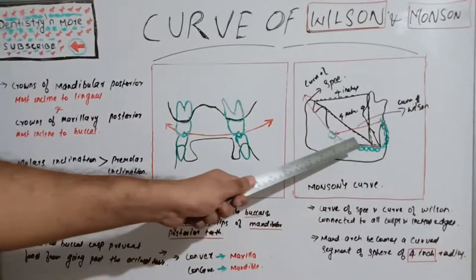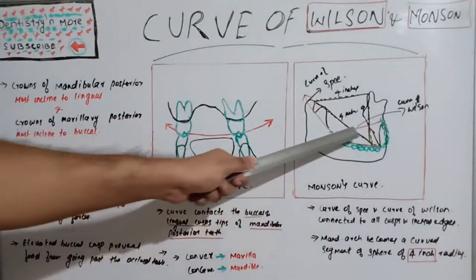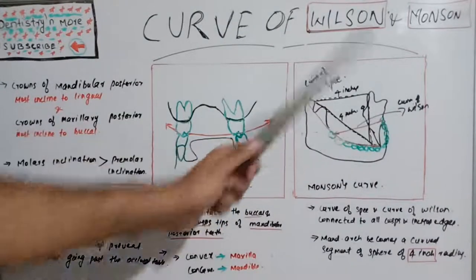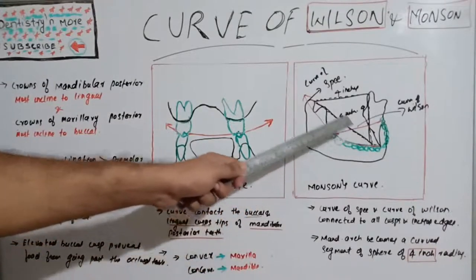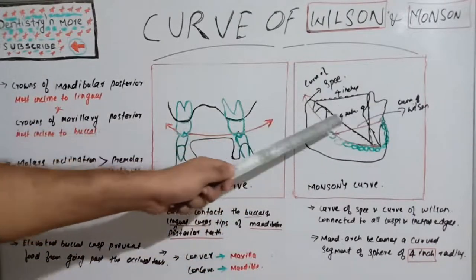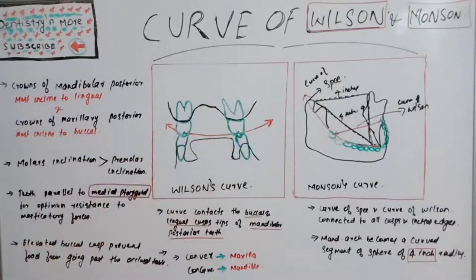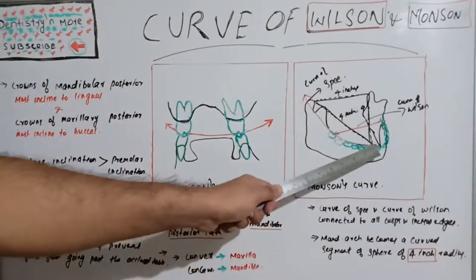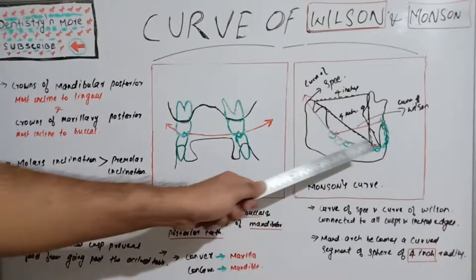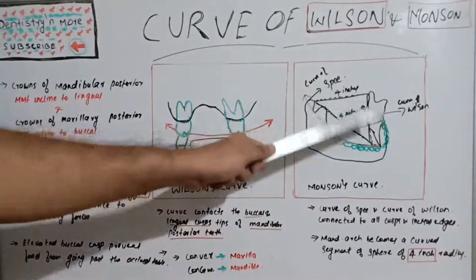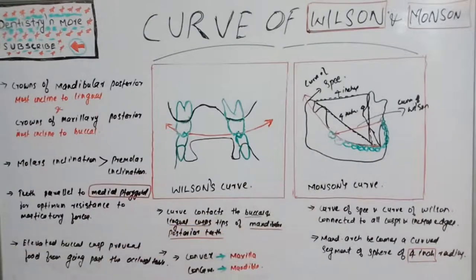This red line is curve of Spee and you can see this mediolateral curve which is the curve of Wilson. When we combine this, we get a 4-inch equilateral triangle which is connecting 4 inches from the condyles on either side and also to the central incisor mesial side. All sides are equal in dimension, that is 4 inches. That is known as Monson's curve.